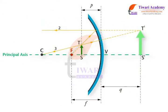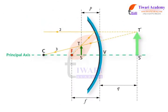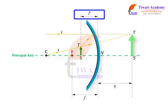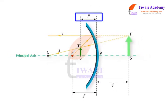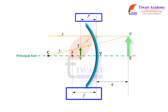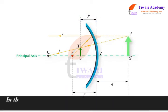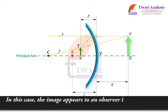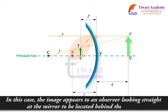This figure shows what happens when the object distance P is less than the focal length F. In this case, the image appears to an observer looking straight at the mirror to be located behind the mirror.